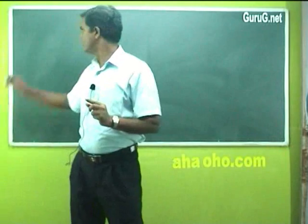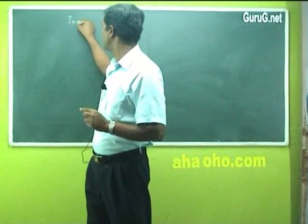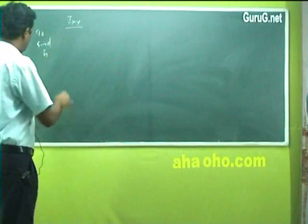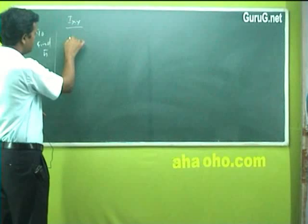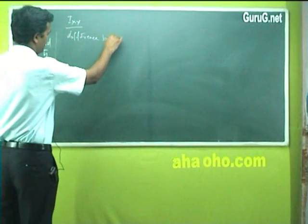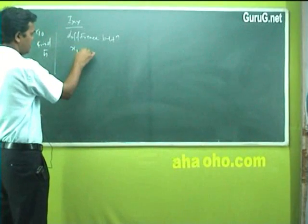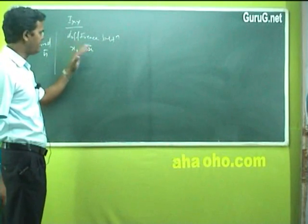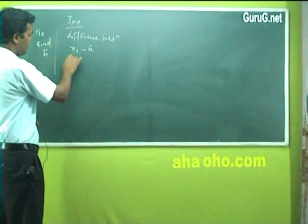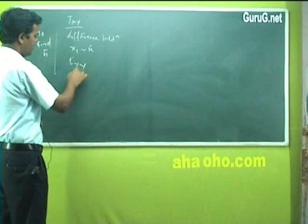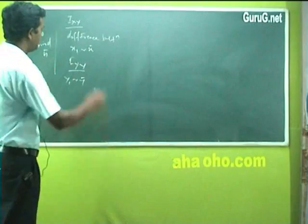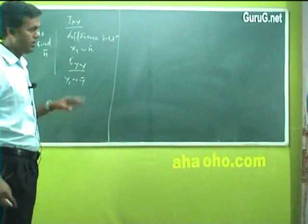While finding Ixx, to find h-bar: h-bar is the difference between the x1 value and the x-bar value — whatever the difference, whether it is 40, 60, or 20. While finding Iyy, h-bar is the y1 difference minus y-bar. That is it. This will complete your moment of inertia topic.